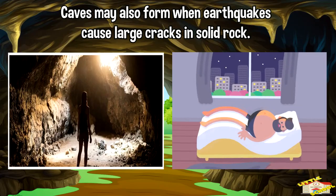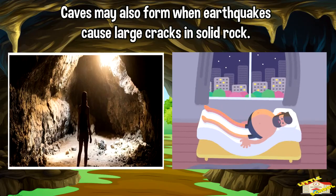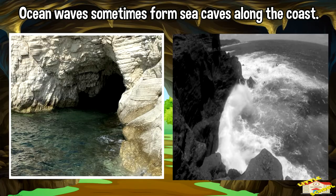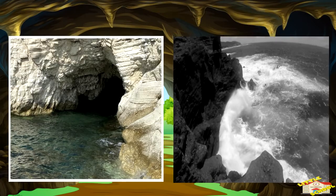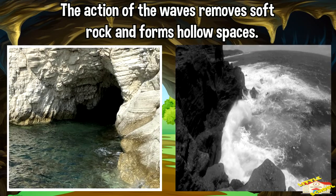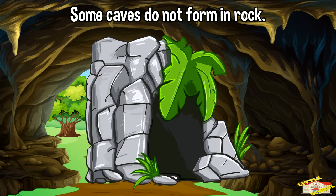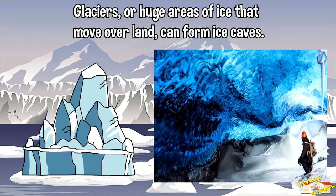Caves may also form when earthquakes cause large cracks in solid rock. Ocean waves sometimes form sea caves along the coast. The action of the waves removes soft rock and forms hollow spaces. Some caves do not form in rock — glaciers, or huge areas of ice that move over land, can form ice caves.